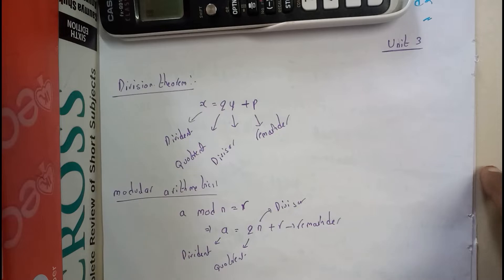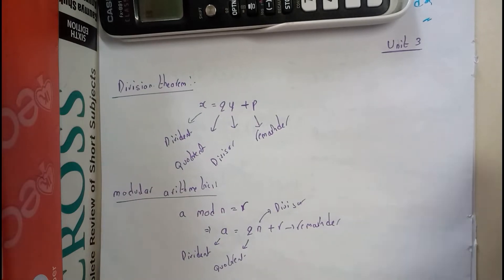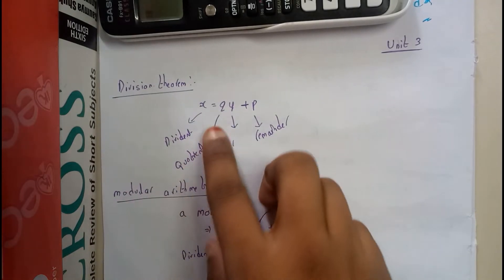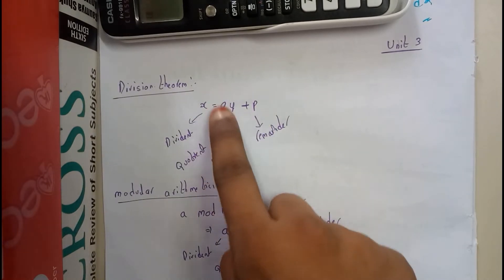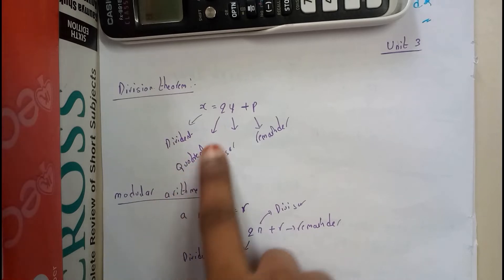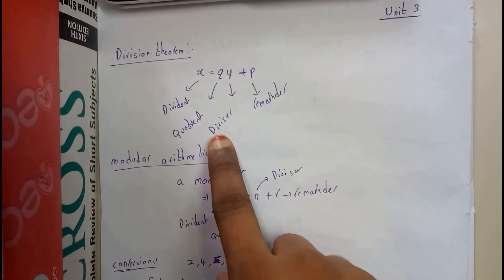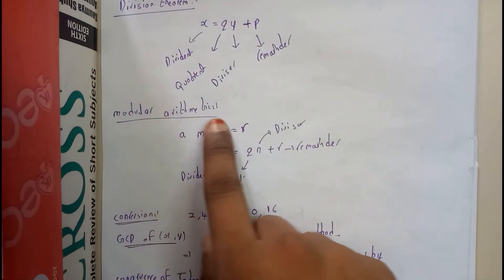Normal GCD, LCM, prime factors, and definitions—everything will be for two marks mostly. Division theorem is x = qy + r, where x and y are integers. x is the dividend, q is the quotient, y is the divisor, and r is the remainder.